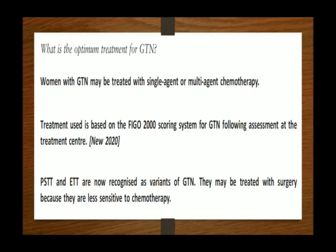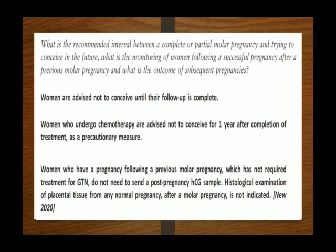What is the recommended interval between a complete or partial molar pregnancy and trying to conceive? Women are advised not to conceive until their follow-up is complete. Women who have undergone chemotherapy are advised not to conceive for one year after completion of treatment as a precautionary measure. Women who have a pregnancy following a previous molar pregnancy and have not required treatment for GTN do not need to send a post-pregnancy HCG sample. Histological examination of placental tissue from any normal pregnancy after a molar pregnancy is not indicated.